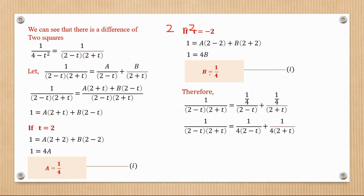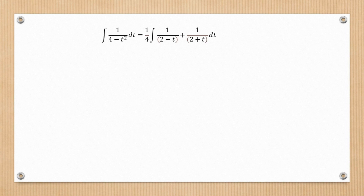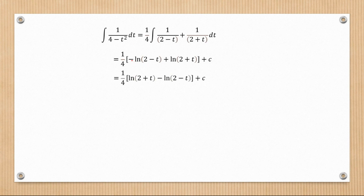Now we can integrate the partial fractions. Factoring out 1/4, we integrate each term. Using u-substitution, the first term gives -ln|2 - t| and the second gives ln|2 + t|. Rearranging using the laws of logarithms, subtracting logs means dividing, so we get (1/4) ln|(2 + t)/(2 - t)| + C.